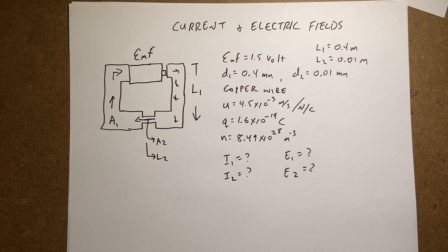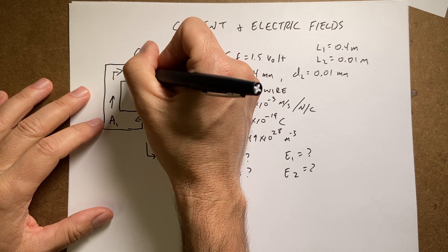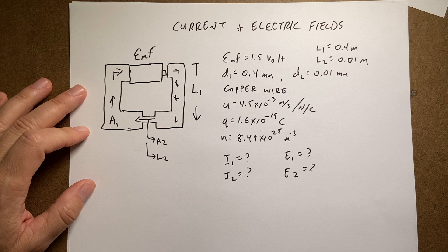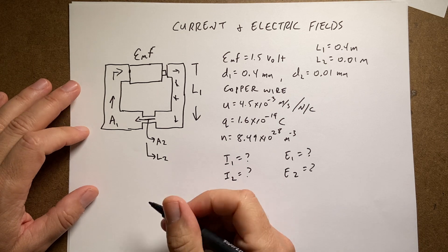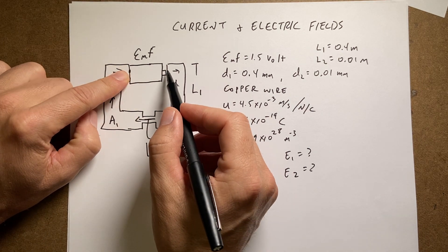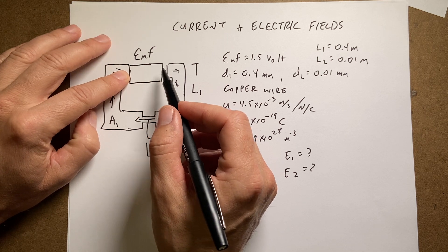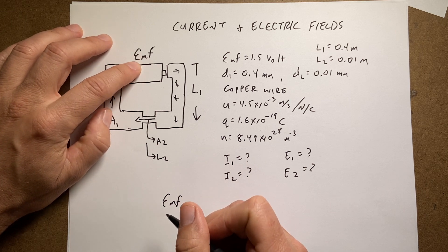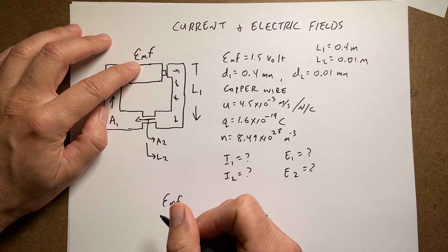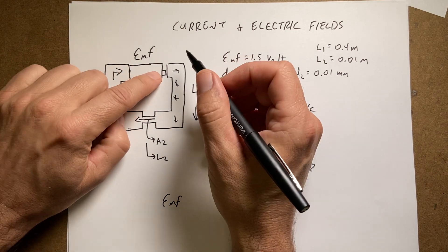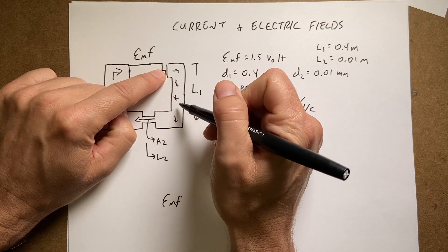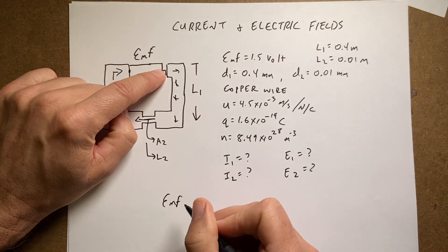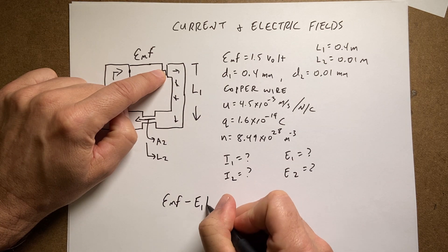Let's start off with the loop rule. The loop rule says that if I start at any point and add up the changes in potential and get back to that same point, I have to get delta V equals zero. So if I start right here and go that way, what's my change in potential? Well, it's the battery voltage, which is EMF — electromotive force. Now I'm moving in the direction of the electric field E1 over the length L1, so that's going to be a change in potential of negative E1 times L1.